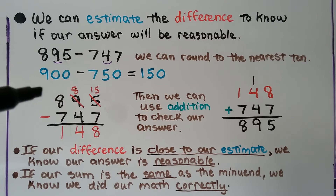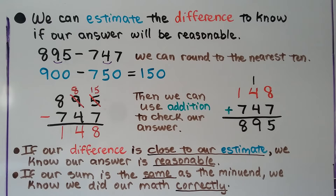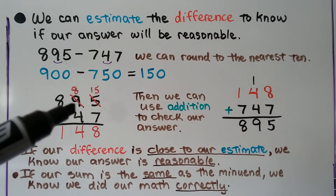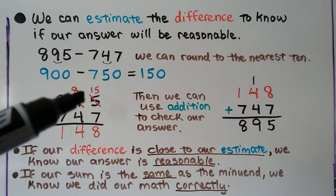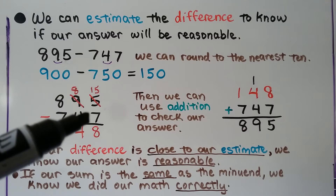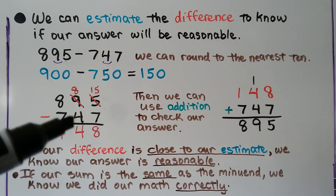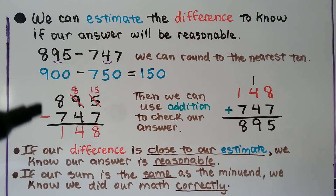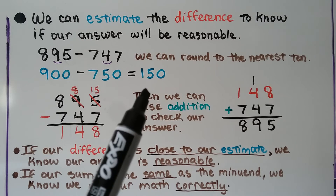We have 895 minus 747. We can see 5 is less than 7, so we need to regroup. We take a 10 from the tens place — the 9 becomes 8. We give that 10 to the ones place. Now instead of 5 ones, we have 15 ones. 15 ones take away 7 ones is 8 ones. Now we do 8 minus 4, which is 4. And we do the hundreds: 8 minus 7 is 1. So our difference is 148. That's very close to 150.